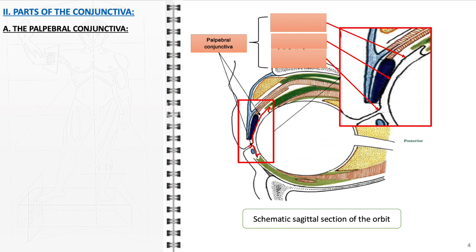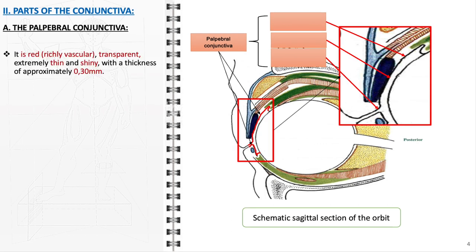The palpebral conjunctiva is characterized by its reddish color, indicative of a rich vascular network. It is transparent, extremely thin, and has a shiny surface, with a thickness of approximately 0.30 millimeters.